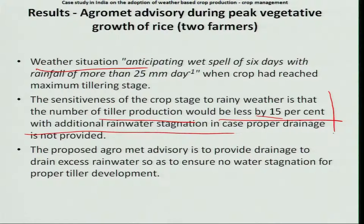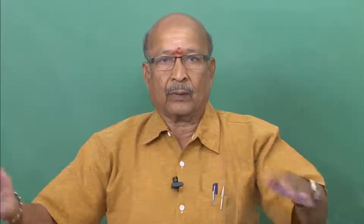This must be protected by following the agro-advisory. What is the advisory? Simply provide drainage — make the water drain out. Even though you receive rainfall, the water will drain out automatically if drainage is provided. It is very cost-effective and inexpensive. This was tested as a case study under Farmer A and Farmer B conditions. The conclusion was that whoever practiced the agro-advisories was able to reduce crop production risk.